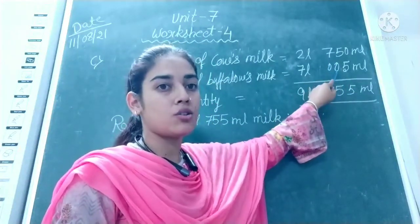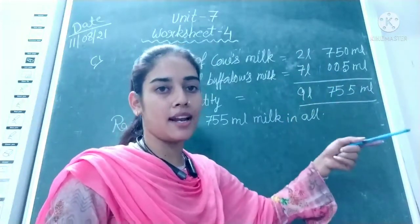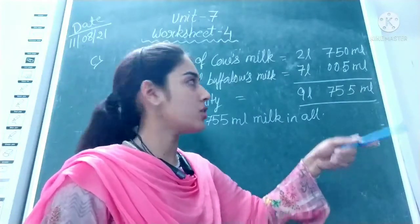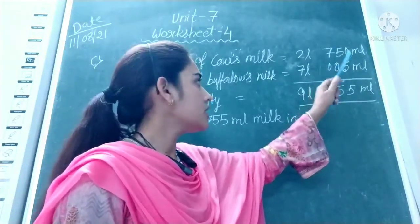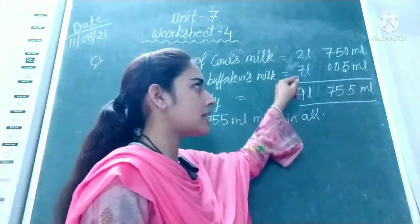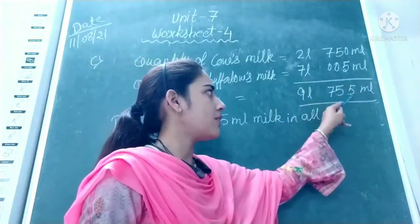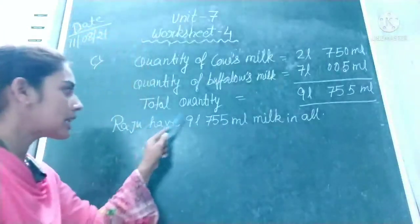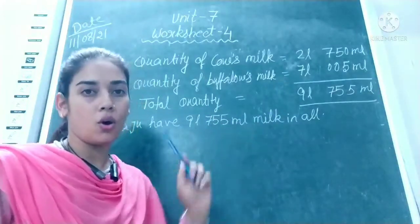You can write zeros in the tens and hundreds places. If you don't write the zeros the answer will still be correct, but for clarity you may write 00. Now for the total quantity, we add these two quantities and get 9 litres 755 millilitres. It means Raju has 9 litres 755 millilitres of milk in all.